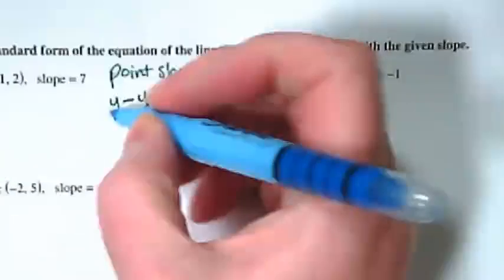And just a reminder from our work yesterday, that x sub 1 and y sub 1, all that they mean is they are the ones we sub a number in for. So when we finish writing this, this y and this x will still be variables, and everything else in there should be a number.